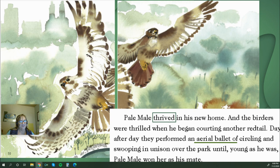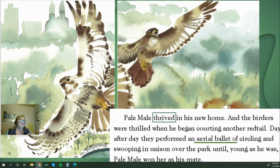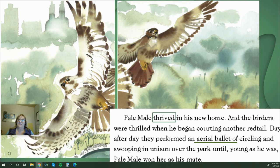Pale Male thrived in his new home, and the birders were thrilled when he began courting another red-tail. Day after day they performed an aerial ballet of circling and swooping in unison over the park, until young as he was, Pale Male won her as his mate. 'Aerial ballet of circling and swooping' — aerial means in the air, and ballet is fancy, smooth dancing. They weren't actually dancing, but it was a smooth, beautiful display that people enjoyed watching.